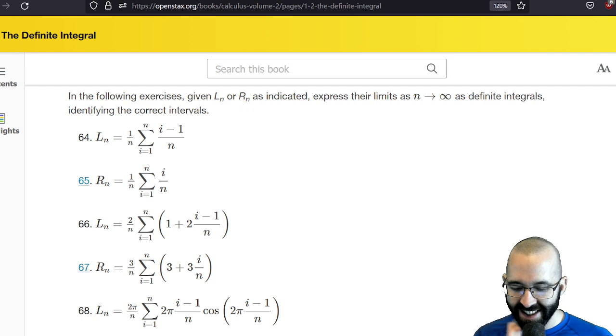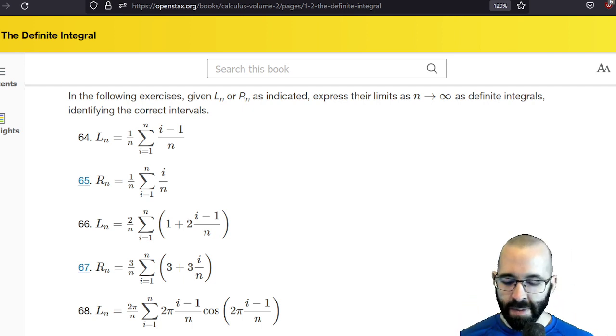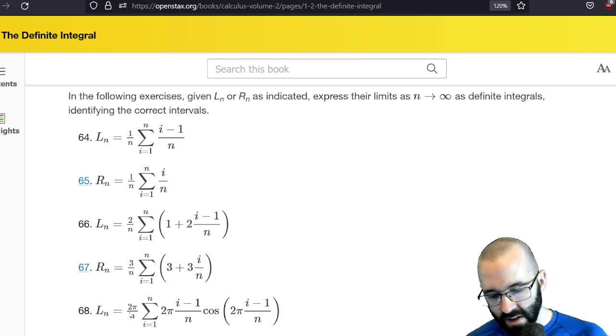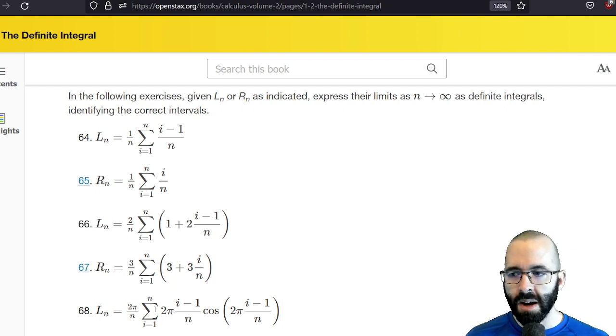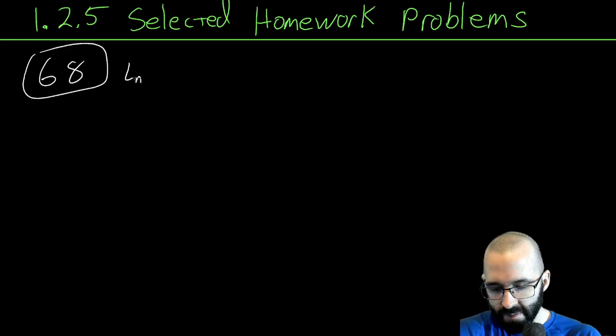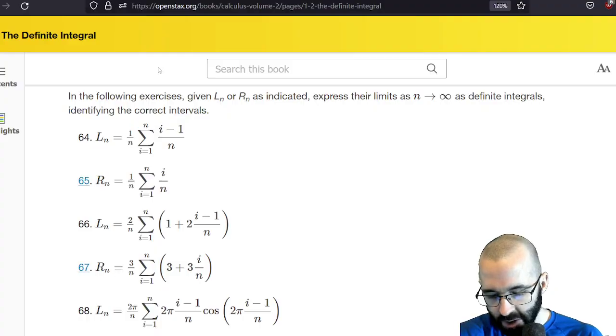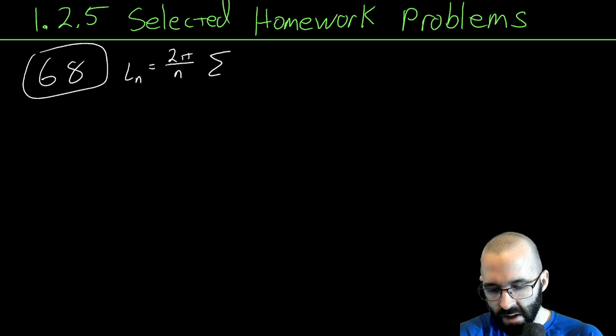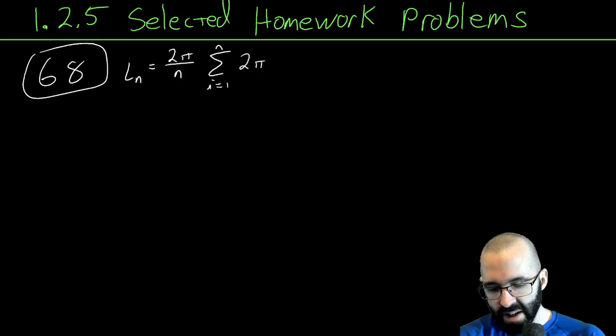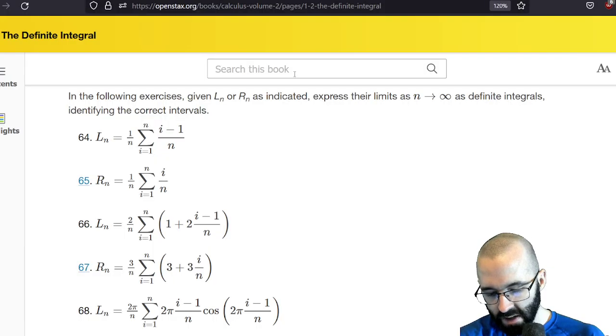We're going to start with 68, which is very similar to the problems from the first video. These are the really fun ones where we have a Riemann sum with n pieces, and as n goes to infinity, this approaches an integral. L_n = 2π/n times the sum, i goes from 1 to n of 2π(i-1)/n times cosine of 2π(i-1)/n.